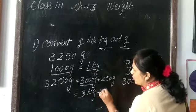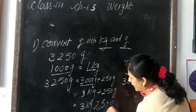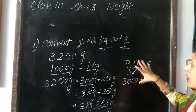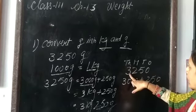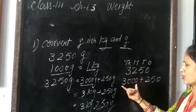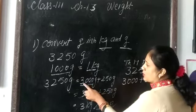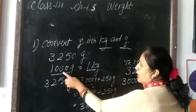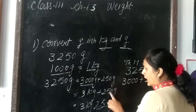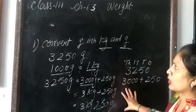So the answer is 3 kilograms plus 250 grams, meaning 3 kilogram 250 gram. I hope it is clear to everyone. To convert grams into kilogram and gram, we separate the thousands place: 3250 becomes 3000 plus 250, and 3000 grams equals 3 kilograms plus 250 grams, which is 3 kilogram 250 gram. I hope this is clear to everyone. Thank you.